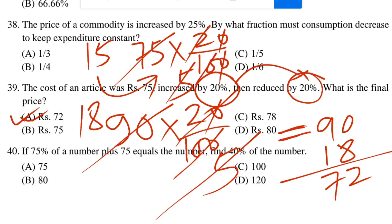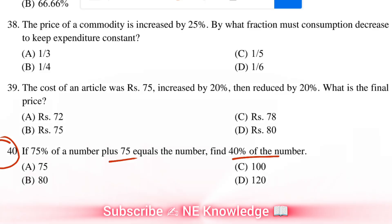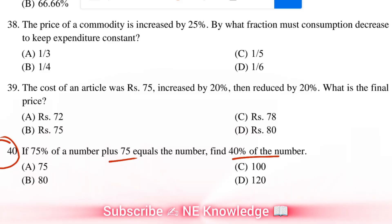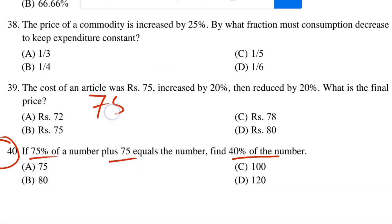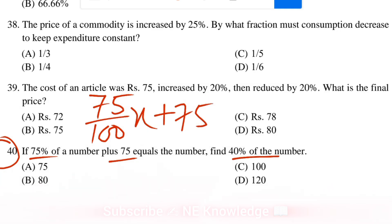Next number: 75% of a number equals 75. Find 40% of the number. So 75% of x equals 75, which means x equals 75 divided by 0.75.